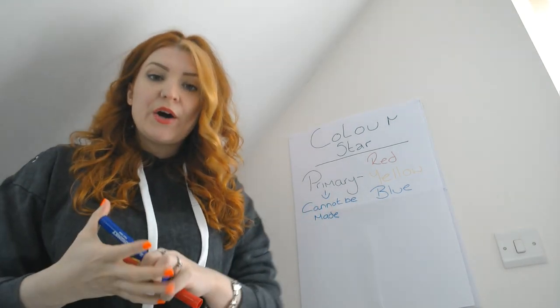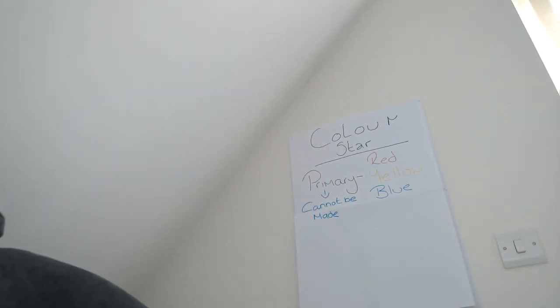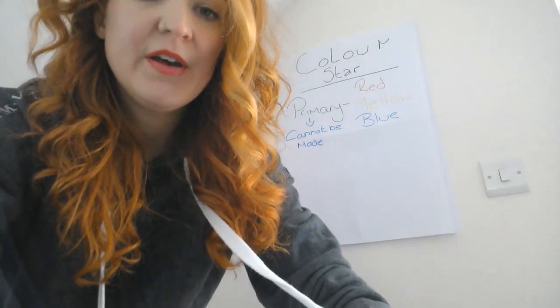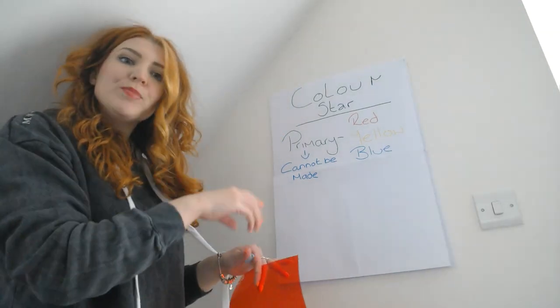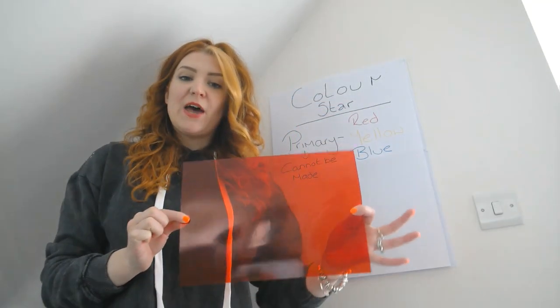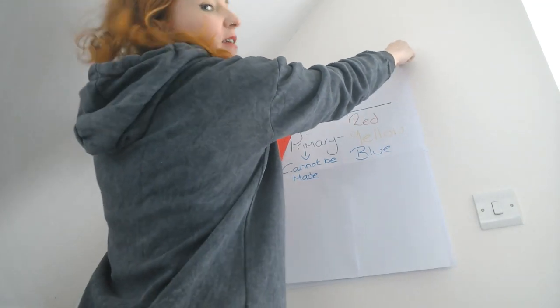These colours are the first three we're going to use to create our colour star. I've got blue tack and coloured overlays just to make it a bit more visual. So the first colour we're looking at is red. Red is a brilliant colour — it is strong, vibrant, and brilliant. Our red goes at the top of our colour star.